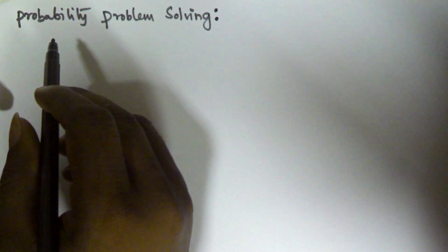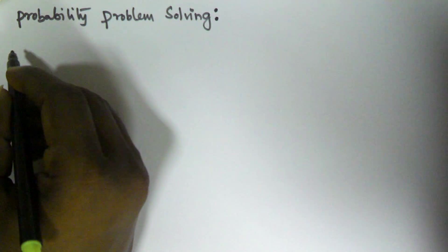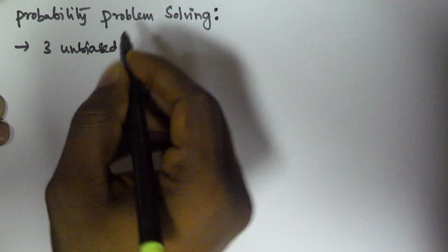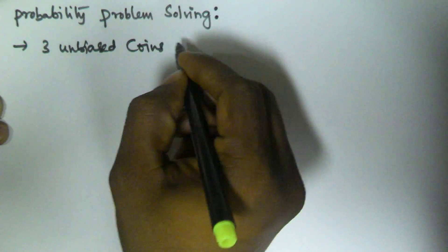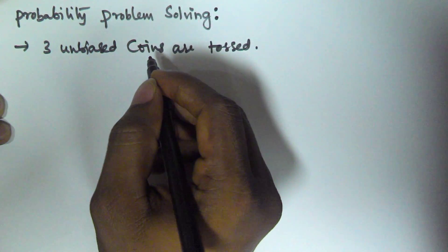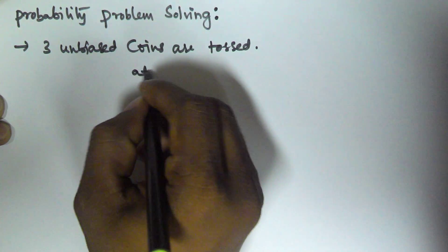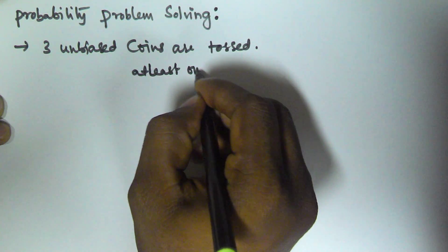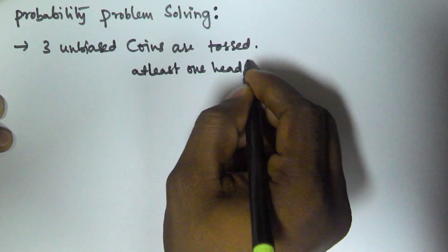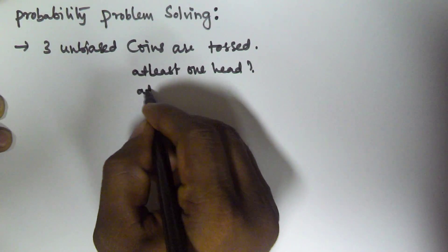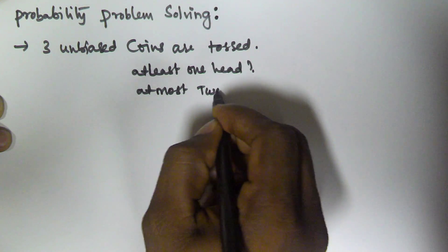Hello friends, in this video we will see some problems related to probability with respect to coins. Let us assume three unbiased coins are tossed. What is the probability of getting at least one head, or at most two heads?